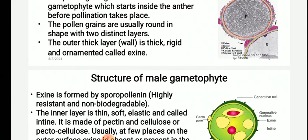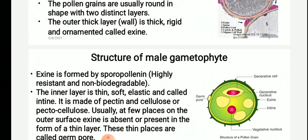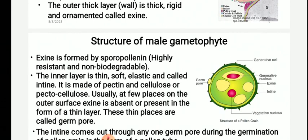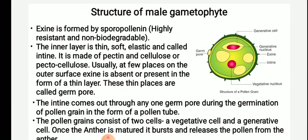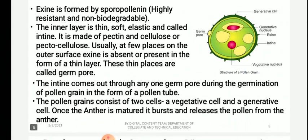Pollen grains are usually round in shape with two distinct layers. The outer layer is called exine — thicker, rigid, and ornamented — and is formed of sporopollenin, which is highly resistant and non-biodegradable. The inner layer is thin, soft, and elastic, called intine, made up of pectin and cellulose, i.e., pectocellulosic in nature. At a few places on the outer surface, the exine is absent or present as a thin layer; these thin places are called germ pores. The intine comes out through any one of the germ pores during germination in the form of a pollen tube.